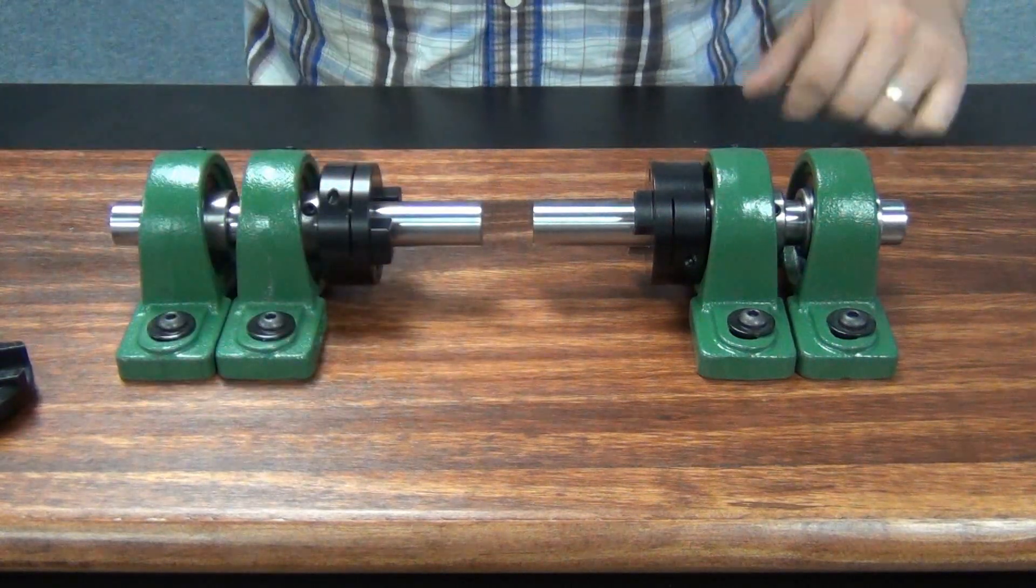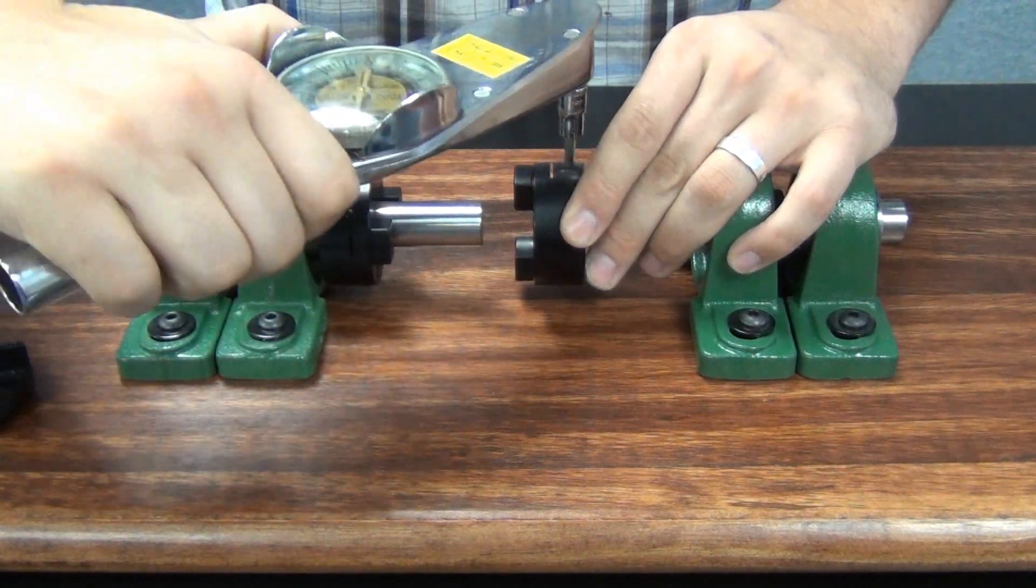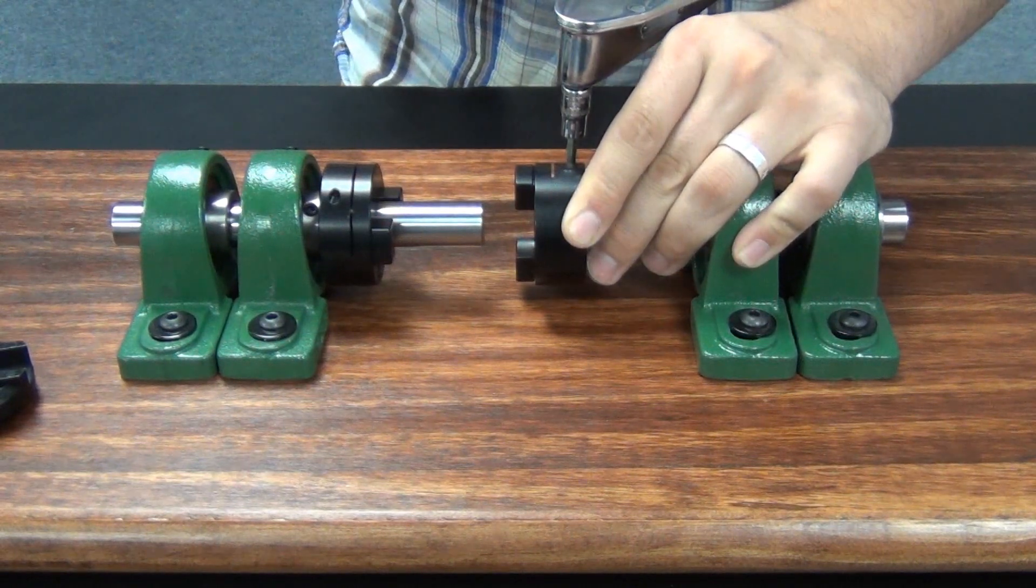Next, slide the hubs onto each shaft being joined with the drive tendons facing each other. Position one of the hubs on the end of the shaft and tighten the screw to its recommended seating torque.